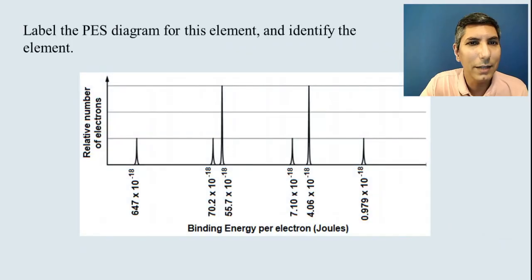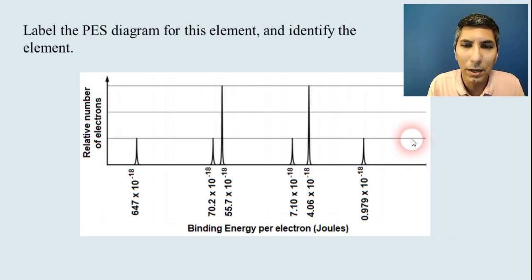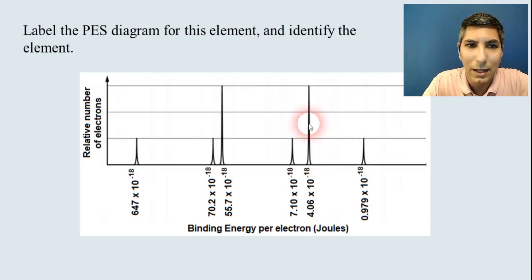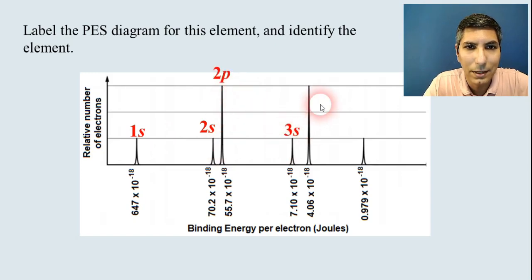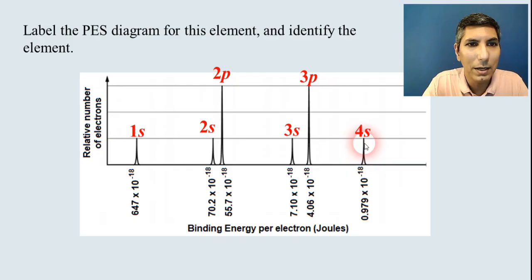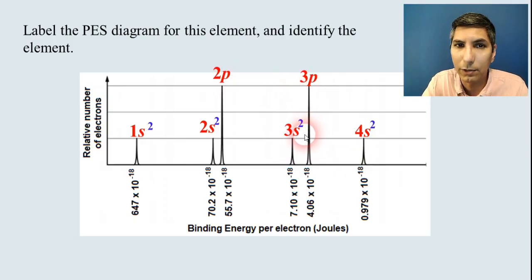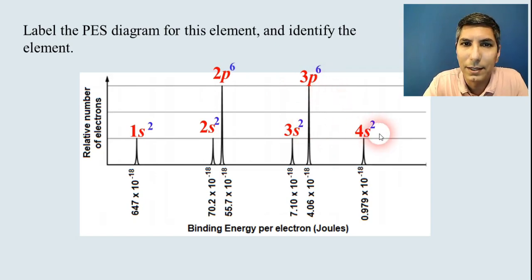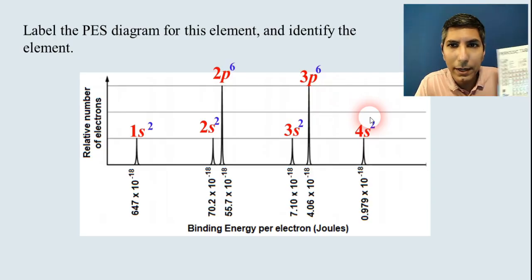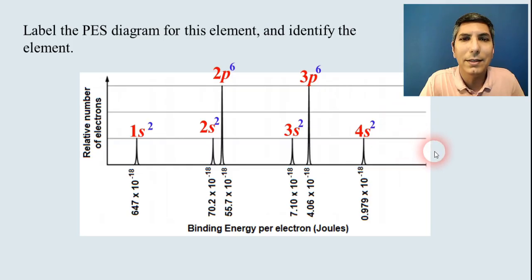Let's try one more example. Let's take a look at this PES diagram, label it, and identify the element. If you can do an electron configuration, you can do a PES diagram. Just label it with the sub-levels: 1s, 2s, 2p, then 3s, 3p, and then 4s as we progress across the periodic table. Now we can label the heights — all of the s sub-levels are going to be 2, because they're all the same height and s maxes out at 2. The p sub-levels are all three times higher than the others, meaning they have three times as many electrons, so that would be 2p6 and 3p6. Match it up on your periodic table to see which one ends with 4s2 — that is calcium.